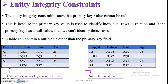Now let us look at entity integrity constraints. Consider two employee tables. The primary key is employee ID. In the first table, the fourth row does not have a primary key value — this is not allowed because a primary key is used to uniquely identify a record and it should never be null. Blank spaces are not allowed in the primary key.